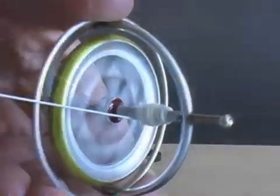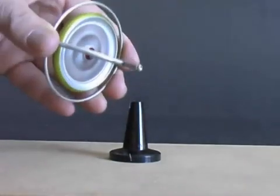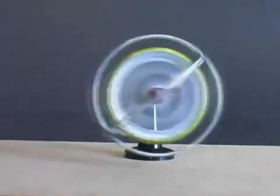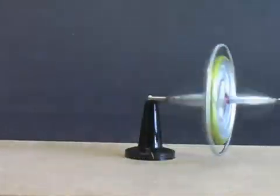This interesting behavior is difficult to explain. Physicists have determined that a rotating wheel has angular momentum, similar to the momentum that a stone flying through the air has.